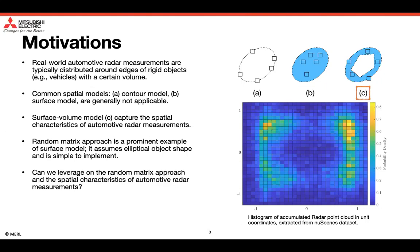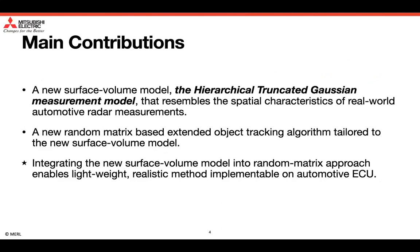In this paper, we show that this is true. The main contributions of this paper are that we propose a new surface volume model called the hierarchical truncated-Gaussian measurement model, that can well resemble the spatial characteristics of real-world automotive radar measurements. We also develop a new random matrix-based extended object tracking algorithm, tailored to the new measurement model. Importantly, integrating the new surface volume model into the random matrix approach enables lightweight, realistic method implementable on automotive ECU.